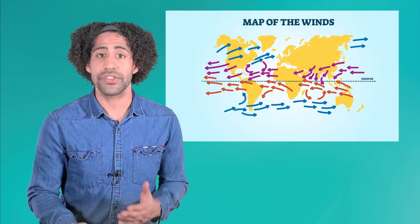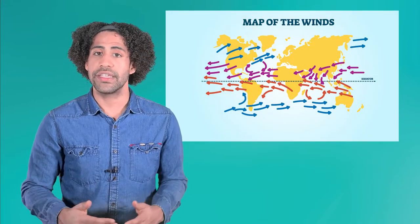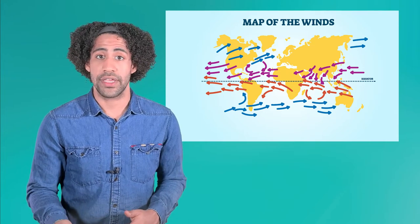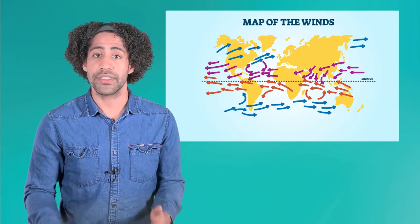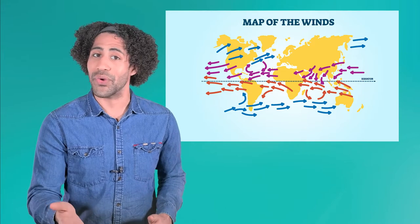In the Northern Hemisphere, they curve to the right, and in the Southern Hemisphere, they curve to the left. So, consistent patterns of heating and cooling across Earth's surface lead to consistent wind patterns, and these patterns follow consistent paths thanks to the Coriolis effect.